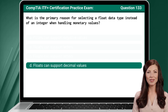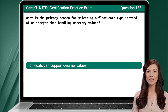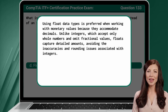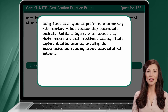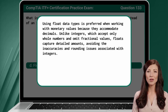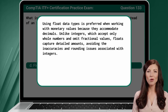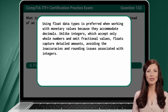The answer is D: Floats can support decimal values. Using float data types is preferred when working with monetary values because they accommodate decimals. Unlike integers, which accept only whole numbers and omit fractional values, floats capture detailed amounts, avoiding the inaccuracies and rounding issues associated with integers.